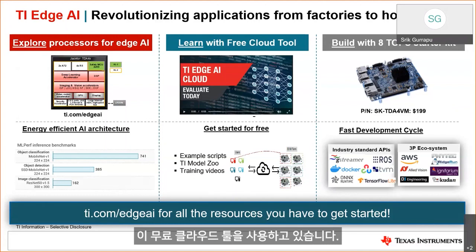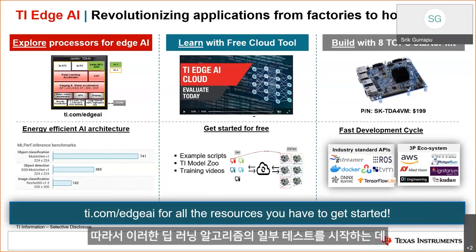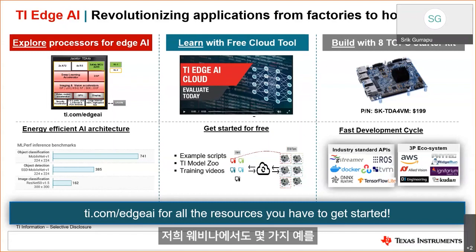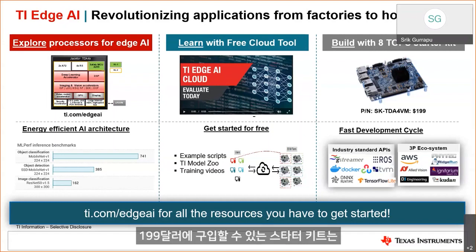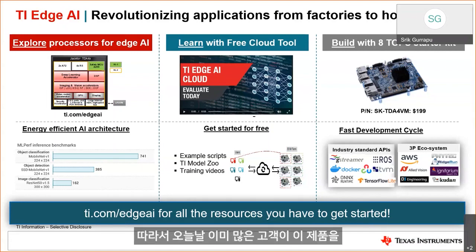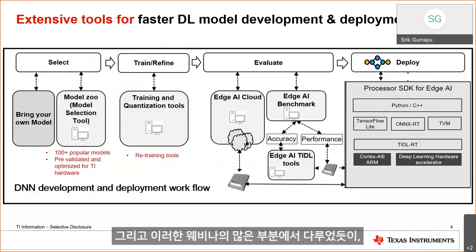Looking at our free cloud tool, we have hundreds of developers already working with it today. You don't need any hardware platform to start testing deep learning algorithms — you can get started today for free. The third offering is our actual hardware starter kit available at a $199 price point, offering eight TOPS of AI performance along with all the accelerators and two arc cores — pretty groundbreaking in the industry at this price point for that performance.